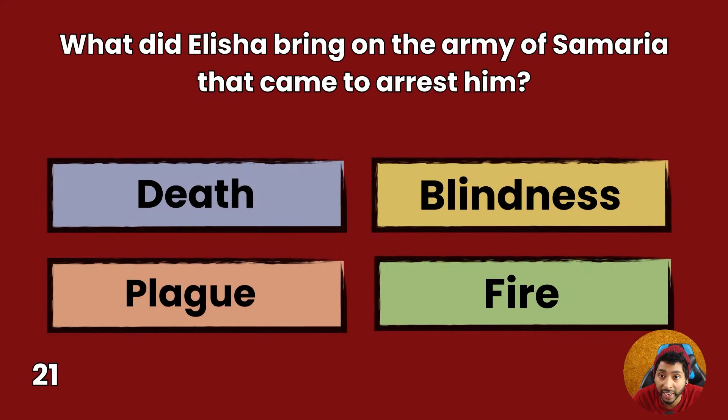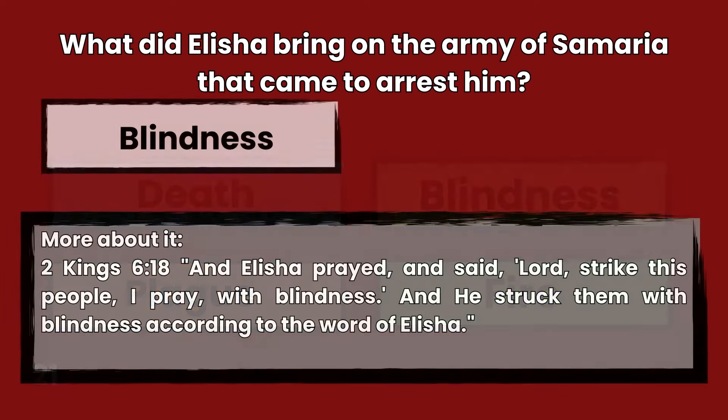Question 21: What did Elisha bring on the army of Samaria that came to arrest him? Death, blindness, plague, or fire? Answer: Blindness. 2 Kings 6:18 — And Elisha prayed and said, Lord, strike this people I pray with blindness. And he struck them with blindness according to the word of Elisha.